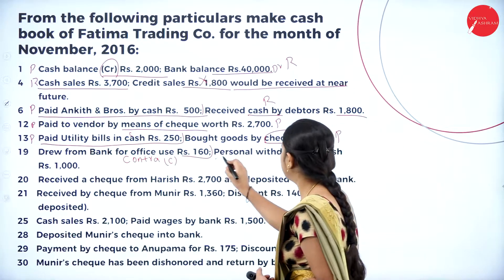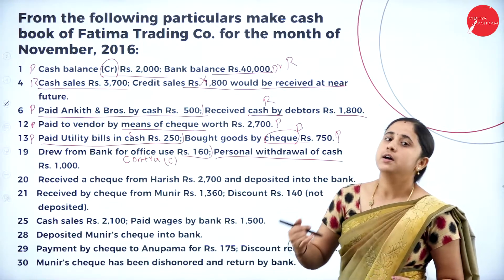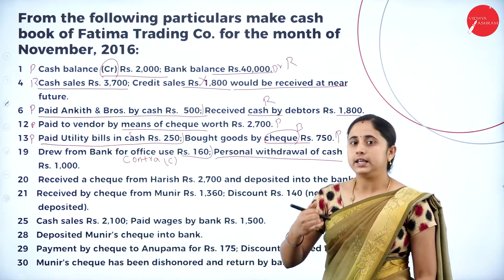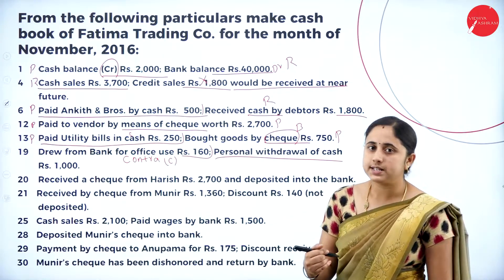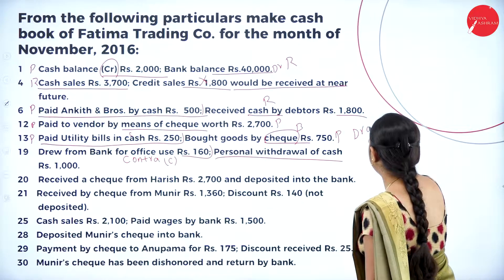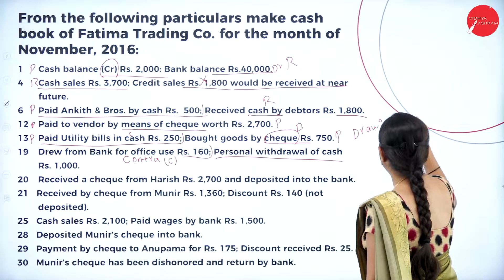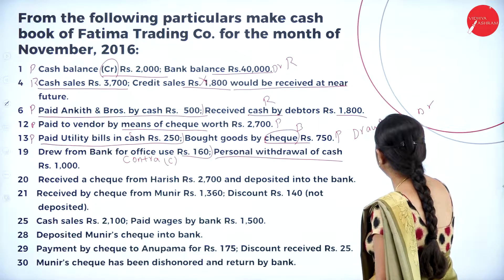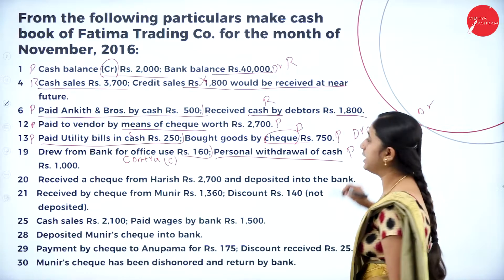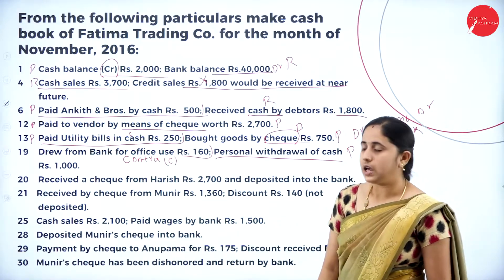Next, personal withdrawal of cash rupees 1000. You are withdrawing from the bank for personal purpose. Any assets taken for personal purpose are considered drawings — drawing account debit to bank account. So write on the payment side, by drawings account, amount in bank column, rupees 1000.